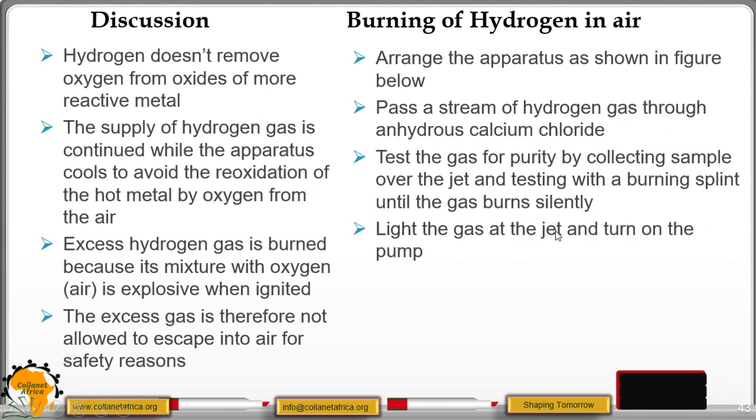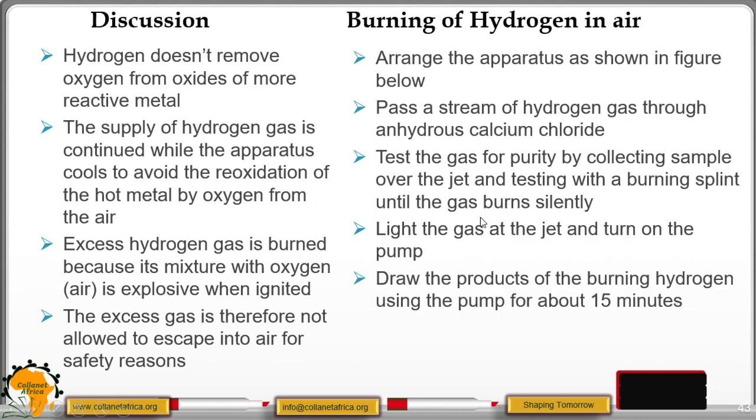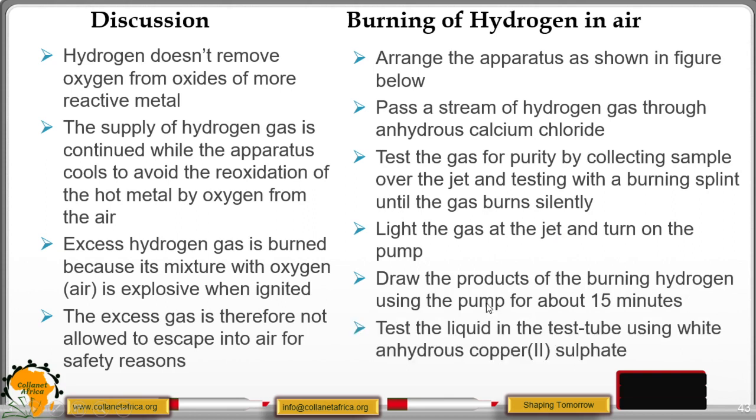Test the gas for purity by collecting samples over the jet and testing with a burning splint until the gas burns silently. Light the gas at the jet and turn on the pump. Draw the product of the burning hydrogen using the pump for about 15 minutes. Test the liquid in the test tube using white anhydrous copper(II) sulfate. Record the observation.